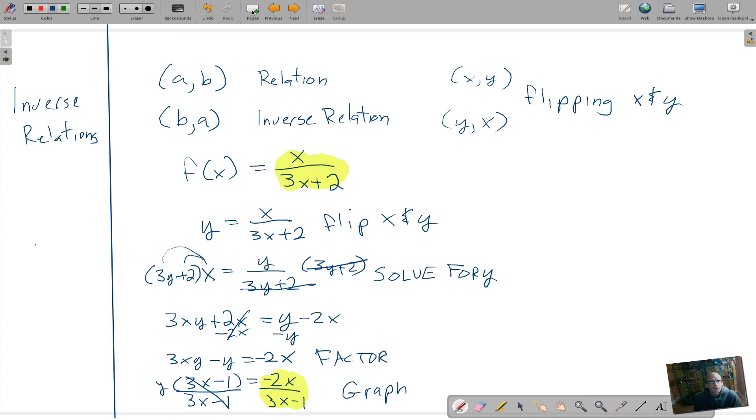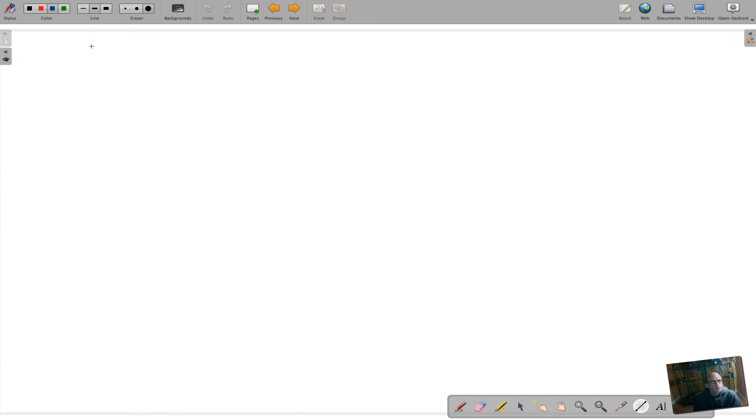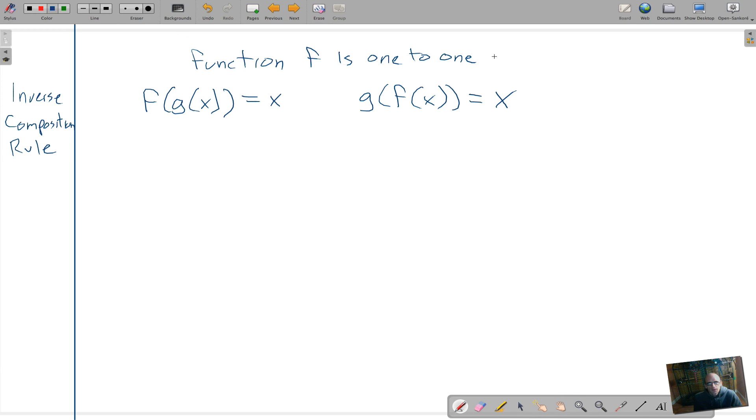The last thing we're going to do today is discuss the inverse composition rule. So if f(g(x)) has to equal x and g(f(x)) has to equal x, then this function f is one-to-one with the function g. And so we'll demonstrate this.